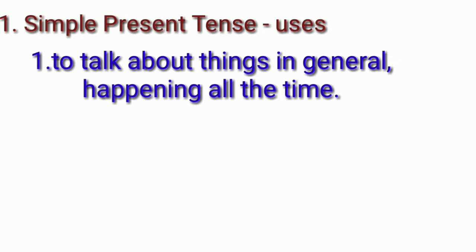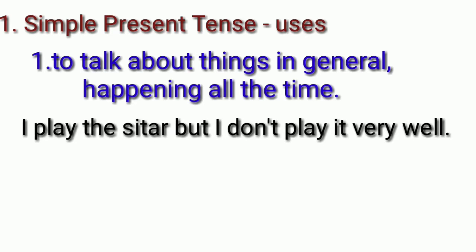For example, the sentence 'I play the sitar, but I don't play it very well.' Here we can see that playing the sitar is happening all the time — it is a general, ongoing habit. That is what the simple present tense expresses: things happening at all times.